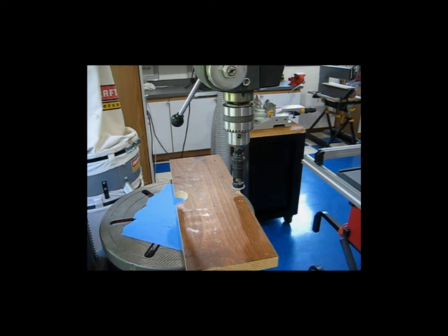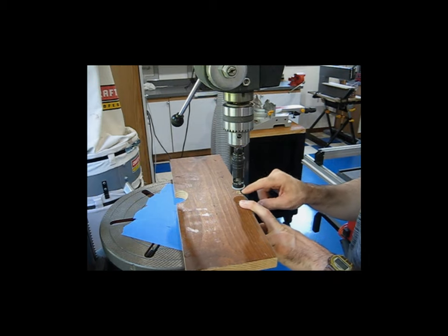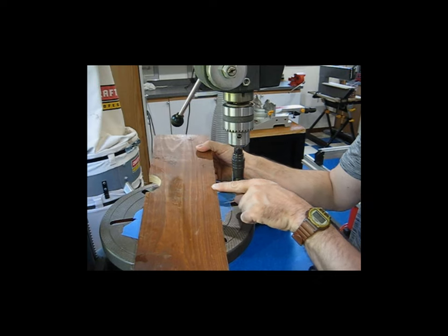All right, so this is my setup for countersinking the flap filler panel. What I have here is just a three-quarter inch piece of scrap wood that I put a hole or a recess in.